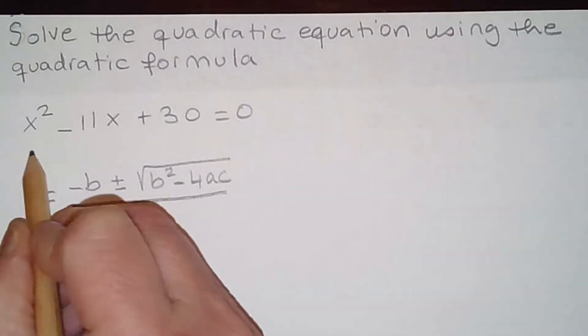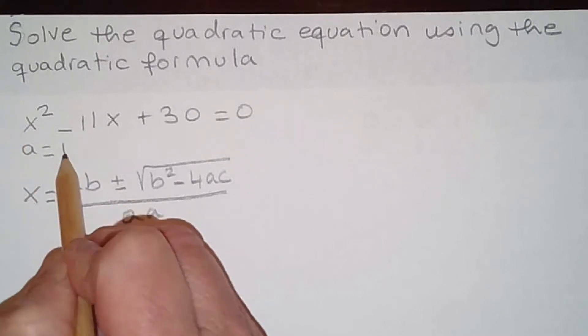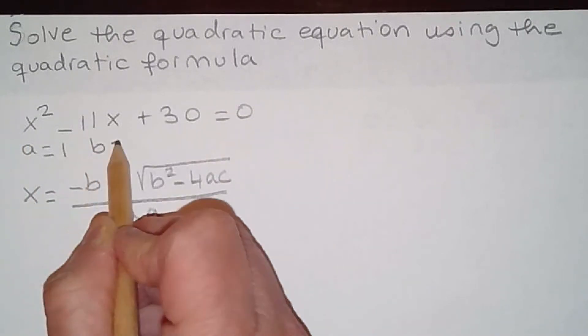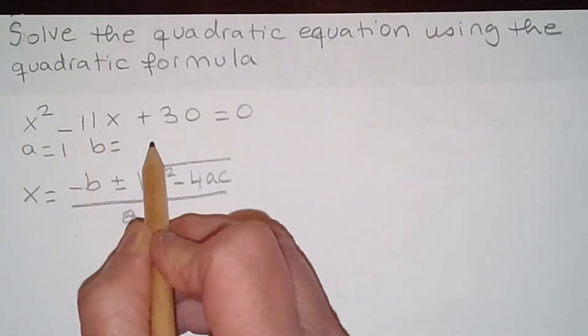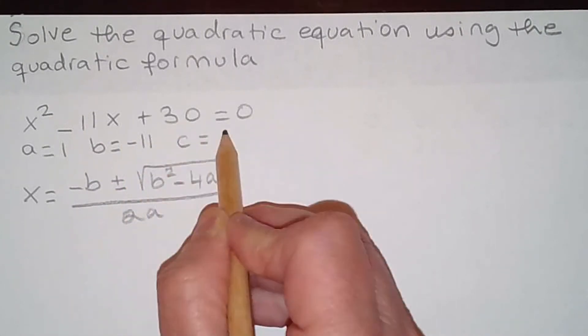a is the coefficient of x squared which in this case is 1. b is the coefficient of x which is negative 11, and c is the constant which is 30.